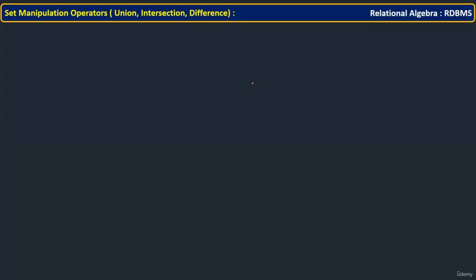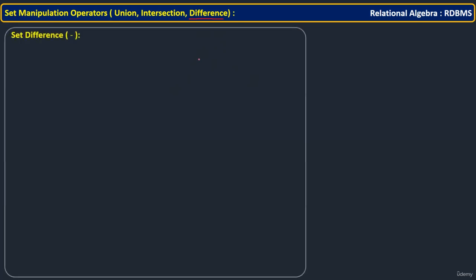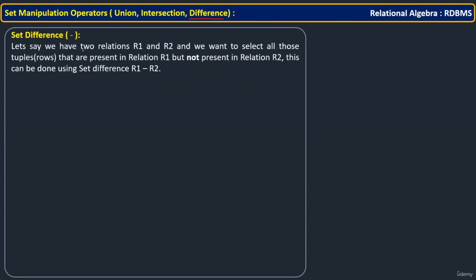Let us see the last set manipulation operator, which is difference. This difference is actually whatever we've seen in set theory — mathematically the same meaning, like union and intersection. So what does it mean? If you have two relations R1 and R2, you are going to select all rows from R1, but the rows which are not present in R2. That is the meaning of set difference.